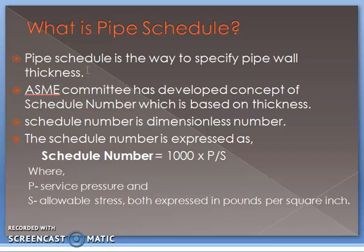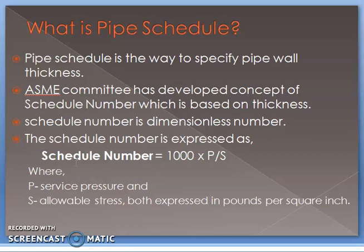For any material, the allowable stress does not change, while the service pressure can vary from application to application. Schedule 40, for example, has a lower wall thickness than Schedule 80 because the service pressure P is in direct proportion to the schedule number.